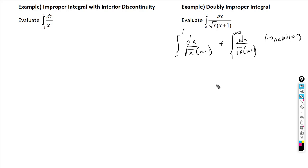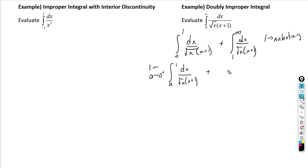Because x = 0 gives a vertical asymptote in the denominator, the first piece becomes the limit as a approaches 0 from the right of ∫ₐ¹ dx/(√x · (x+1)). Because the upper bound is ∞, the second piece becomes the limit as b approaches ∞ of ∫₁ᵇ dx/(√x · (x+1)).